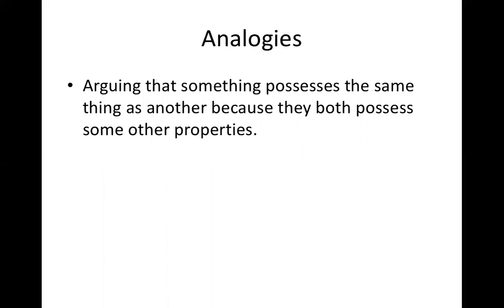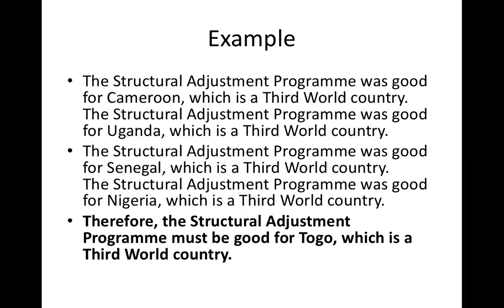Then we have analogies — another kind of extrapolation — arguing that something possesses the same property as another because they both possess some other properties in common. Example: The structural adjustment program was good for a third world country, and good for Nigeria, which is a third world country, and good for two more third world countries — therefore the structural adjustment program must be good for Togo, which is also a third world country.